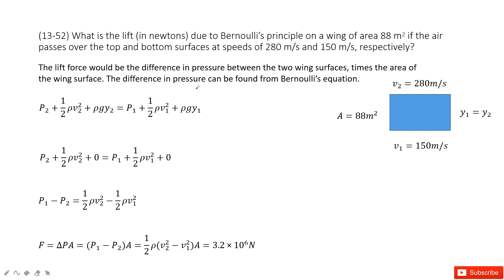In this problem we need to find the lift force for the airplane's wings. We can consider the wing as the object, with position 1 on one side and position 2 on the other. At position 1, the velocity is given, and at position 2, the velocity is also given. Because this wing is very thin, we can consider y1 equal to y2. No problem, right?